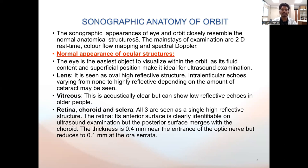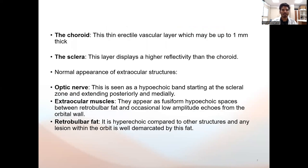The retina's anterior surface is clearly identifiable on ultrasound examination but the posterior surface merges with the choroid. The thickness is about 0.4 mm near the entrance of the optic nerve but reduces to 0.1 mm at the ora serrata. Choroid is a thin erectile vascular layer and sclera displays a higher reflectivity than the choroid. Optic nerve is seen as a hypoechoic band starting at the scleral zone and extending posteriorly and medially. Extraocular muscles appear as fusiform hypoechoic spaces between retrobulbar fat. Retrobulbar fat is hyperechoic compared to other structures and lesions within the orbit are well-demarcated by this fat.